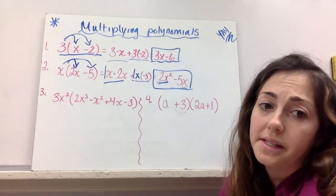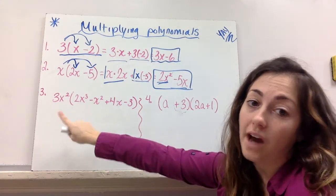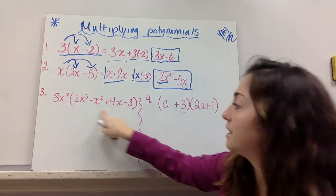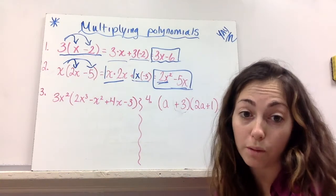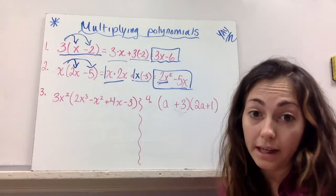So then this monomial times binomial gives you a binomial. Alright, cool. So now number 3, you've got a monomial, but it's not times a binomial. It's times a polynomial, 4 terms. So you need 4 answers. Keep that in mind.